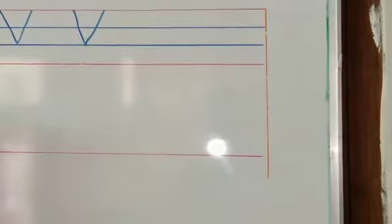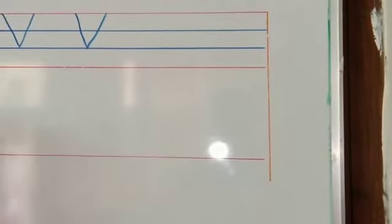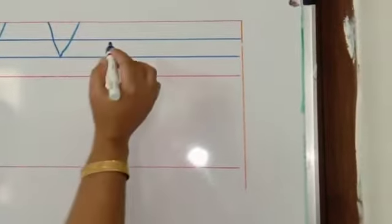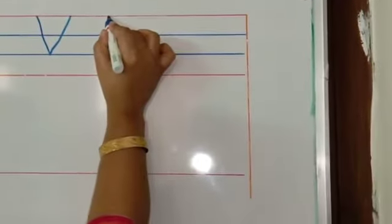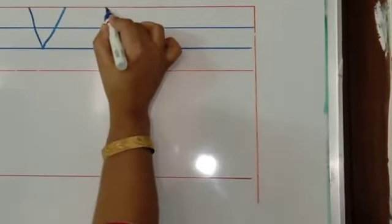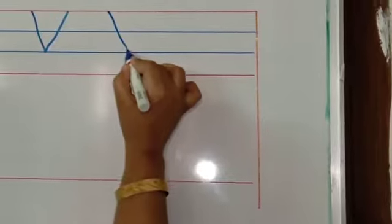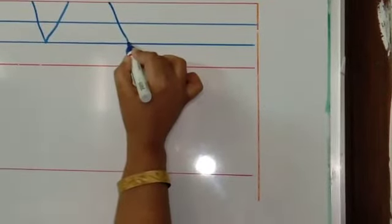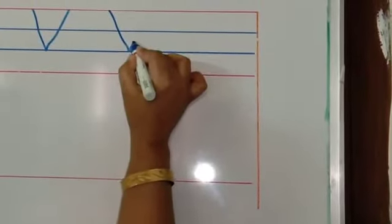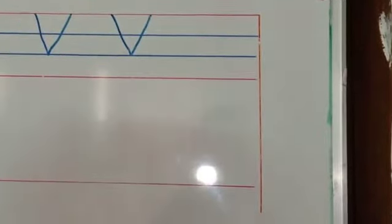Will you write along with me? Look here once again. Keep your pencil here. Bring it down, draw a slant line, take it back with one more slant line to the first red line.